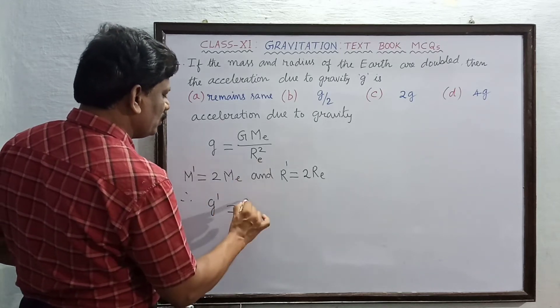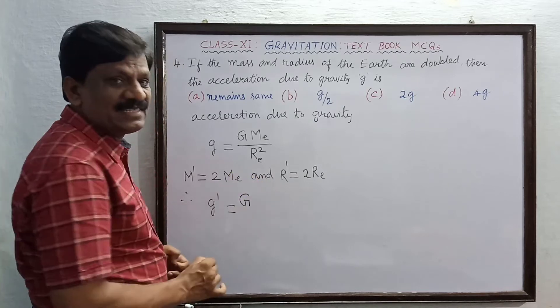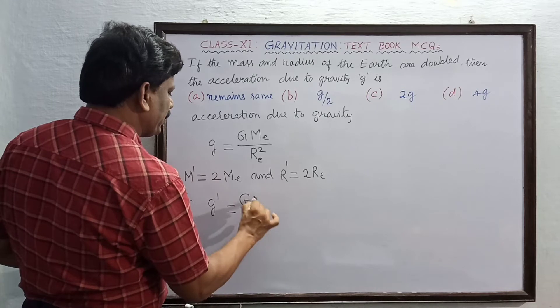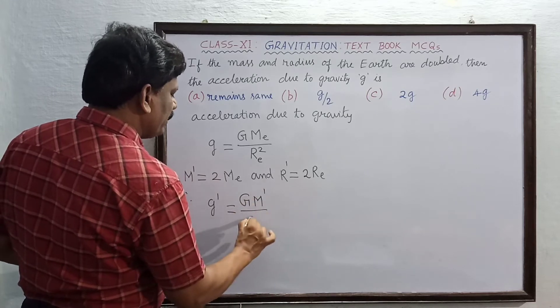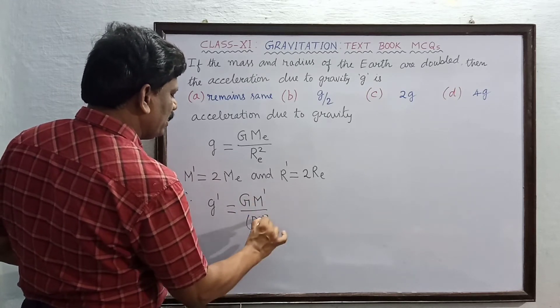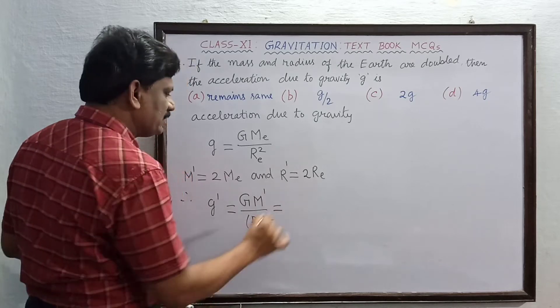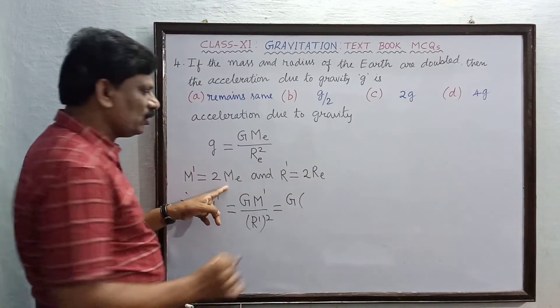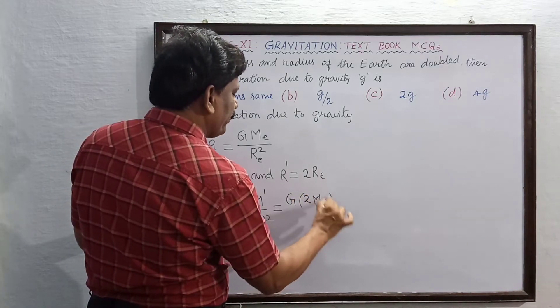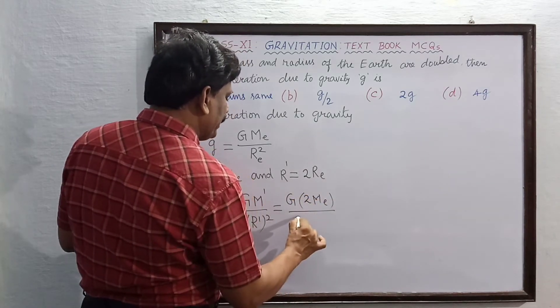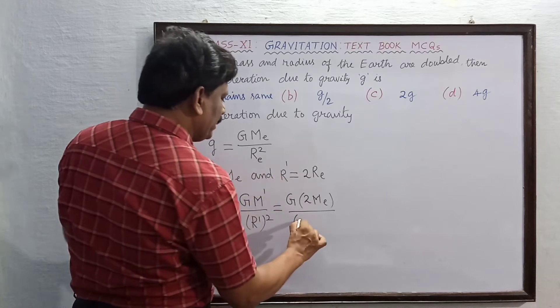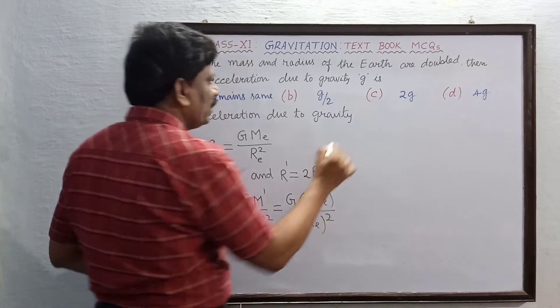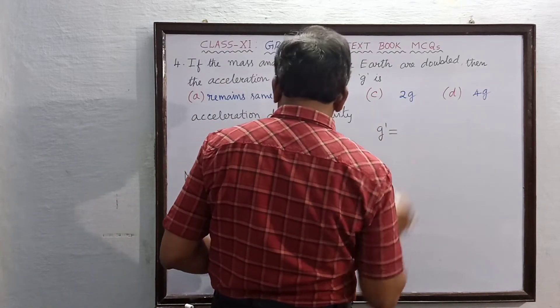Therefore what will be the acceleration due to gravity g dash? G dash is equal to the gravitational constant G into M dash divided by R dash the whole square. This is equal to G into M dash equal to twice the mass, 2ME, divided by R dash equal to two times RE upon the whole square.